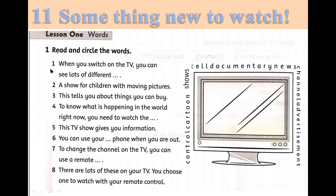Thầy sẽ làm mẫu cho các bạn 1 câu. Câu number 1: When you switch on the TV, you can see lots of different... Khi bạn bật TV lên thì bạn có thể xem rất nhiều cái gì khác nhau. Ví dụ số 1: You can see lots of different shows — thì các bạn sẽ khoanh tròn chữ shows. A show for children with moving pictures — một chương trình cho trẻ em với những bức tranh di động. Nó cũng khá là dễ.